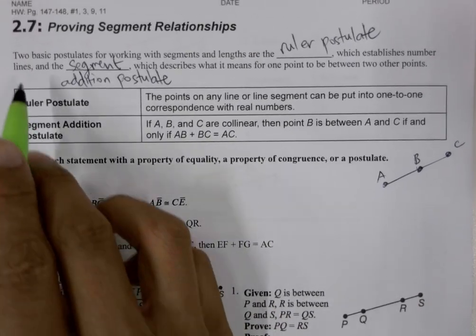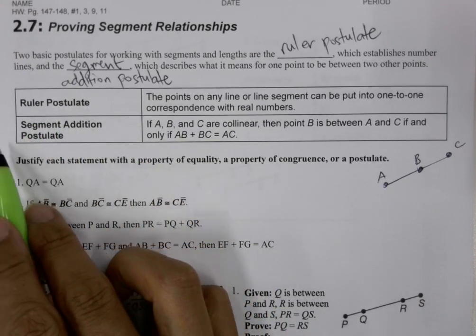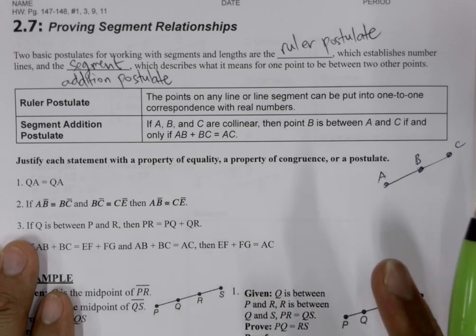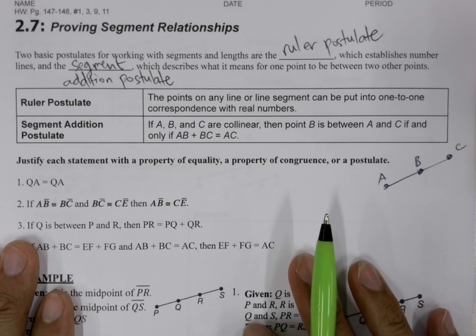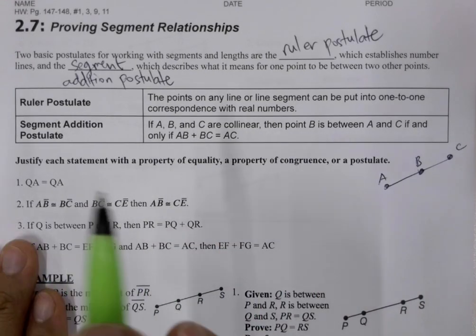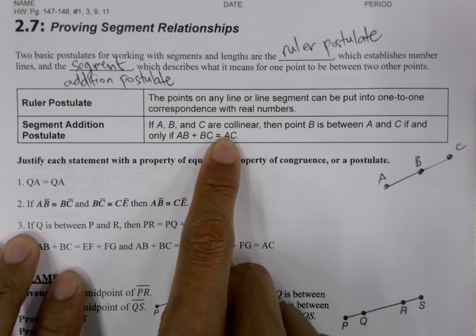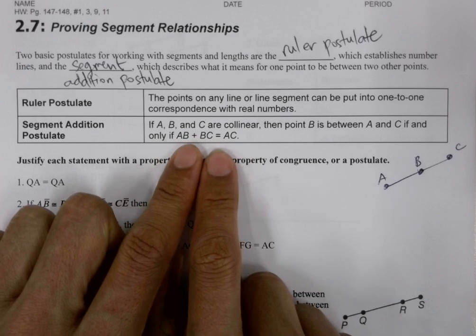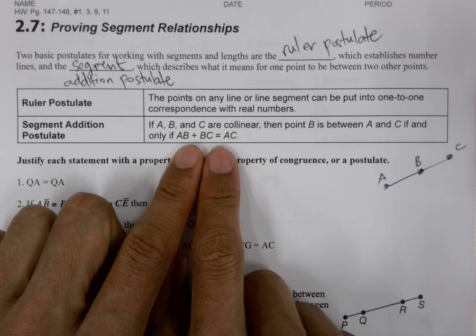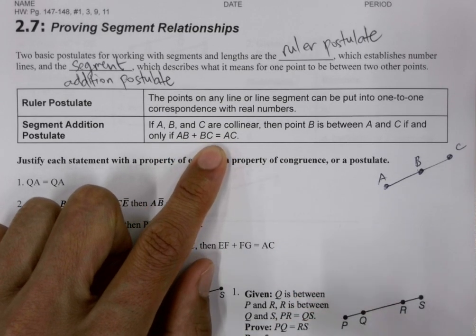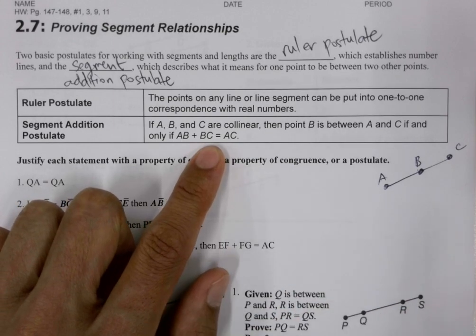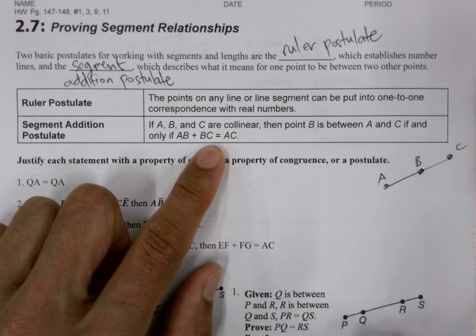In Chapter 2.7, segment addition postulate is the star of the show. Every proof we're going to be working on is going to use the segment addition postulate in order for us to come up with an equation. And then once we have the equation, then we can use our algebraic properties like substitution, addition, and subtraction in order to get to our proof.